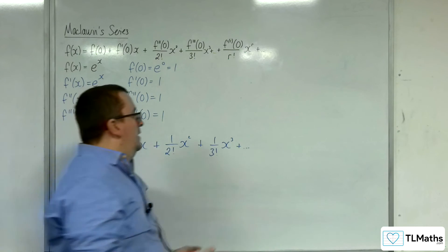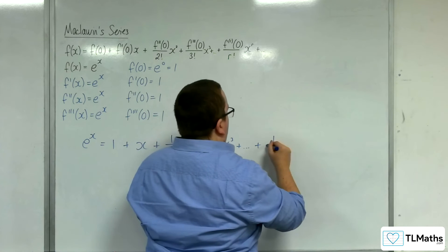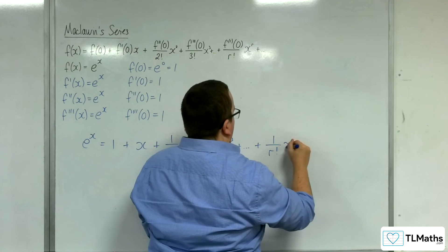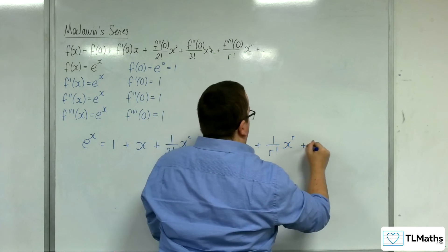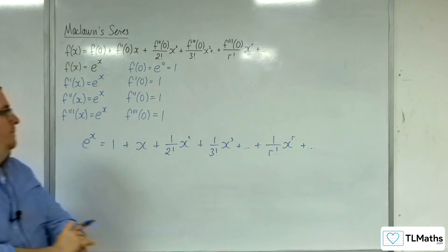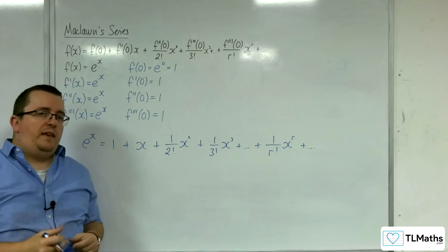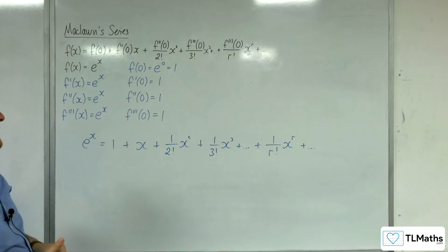So the general term is going to be 1 over r factorial x to the r. And so, this is the Maclaurin expansion for e to the x.